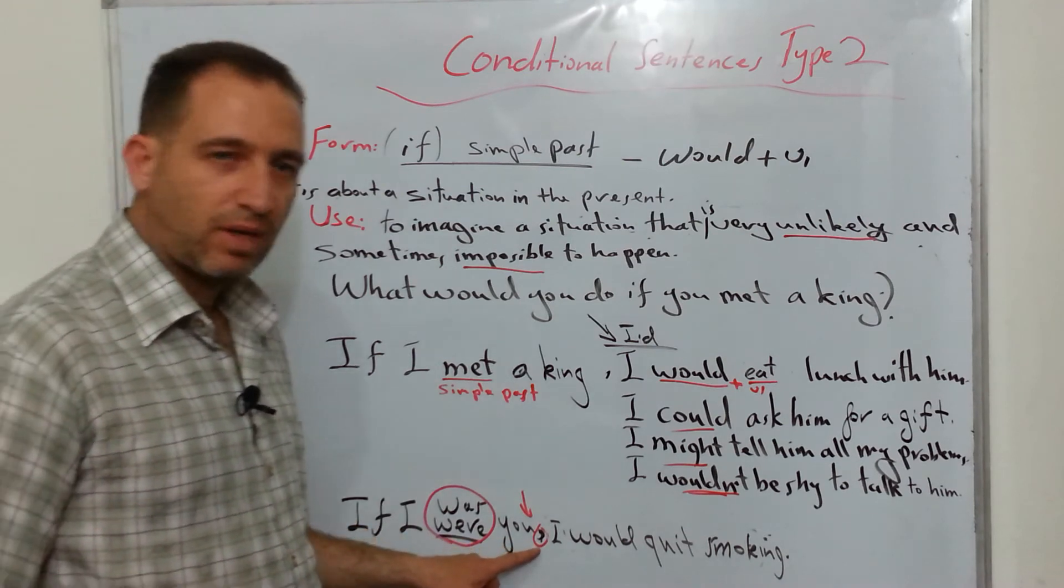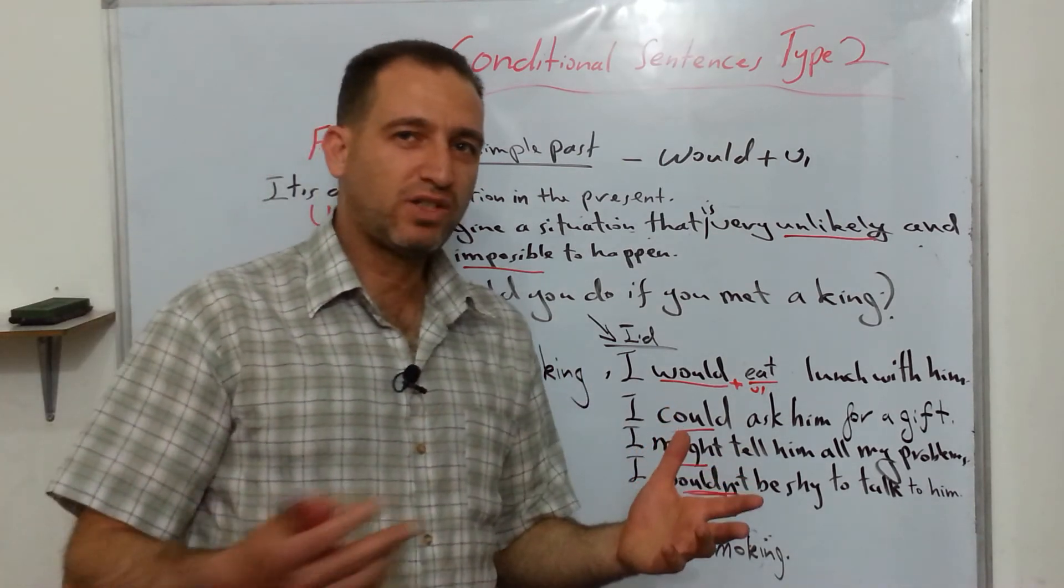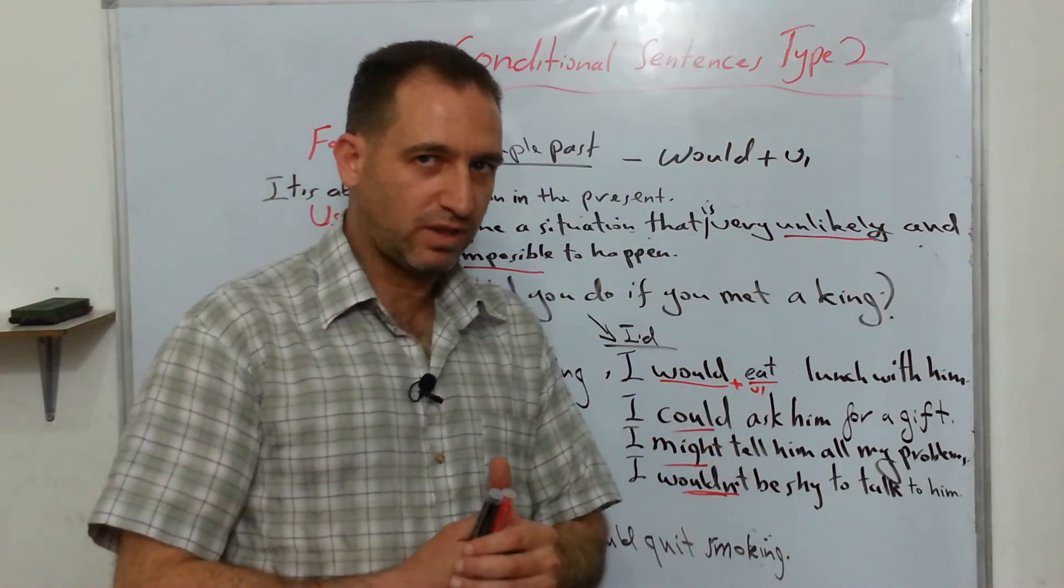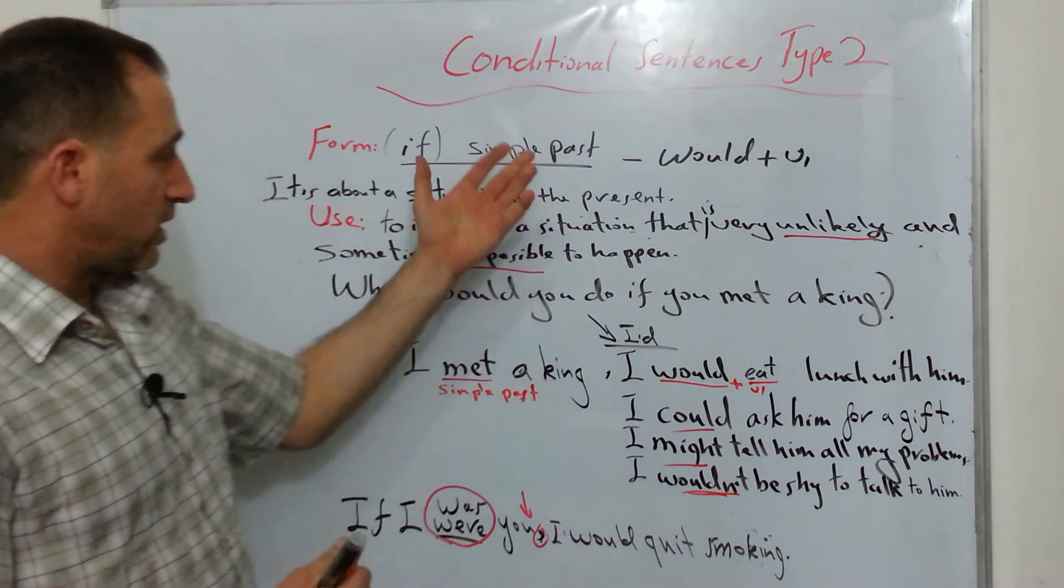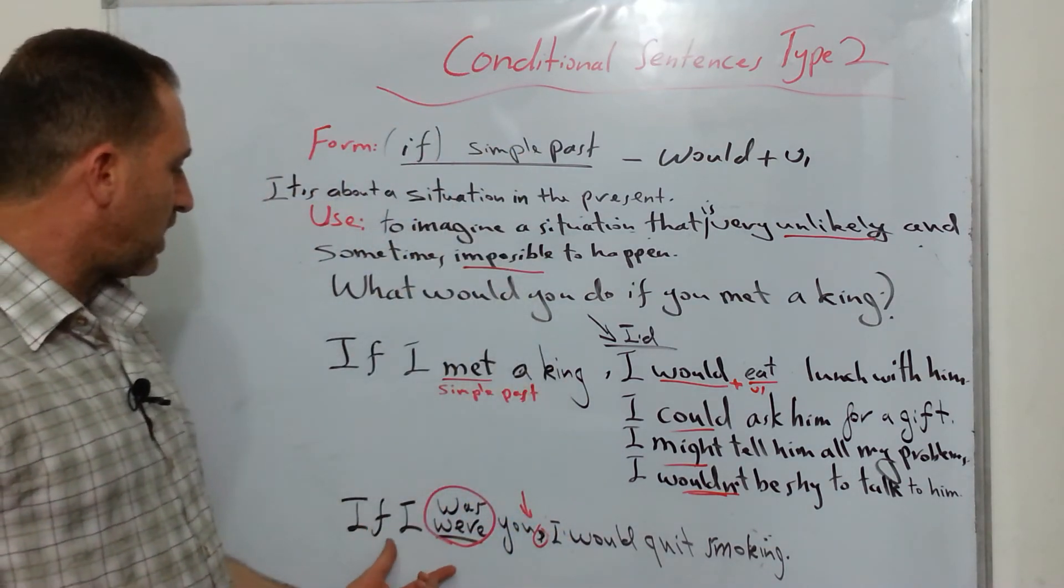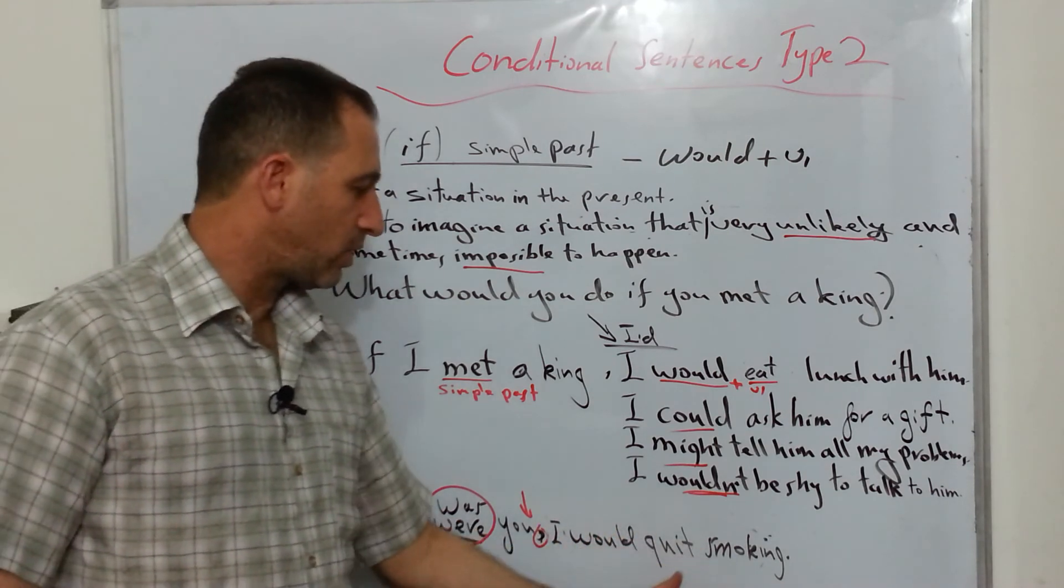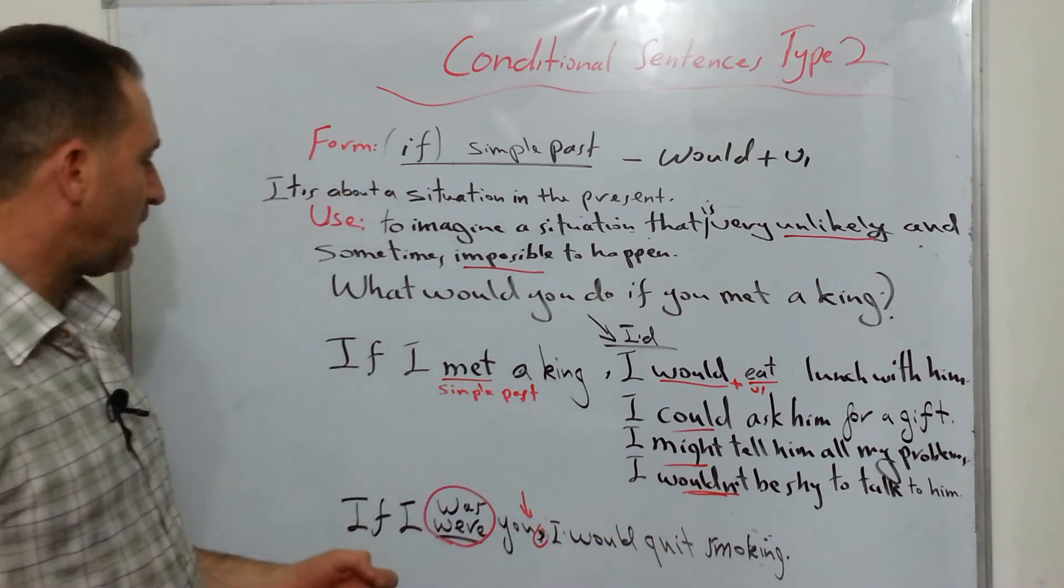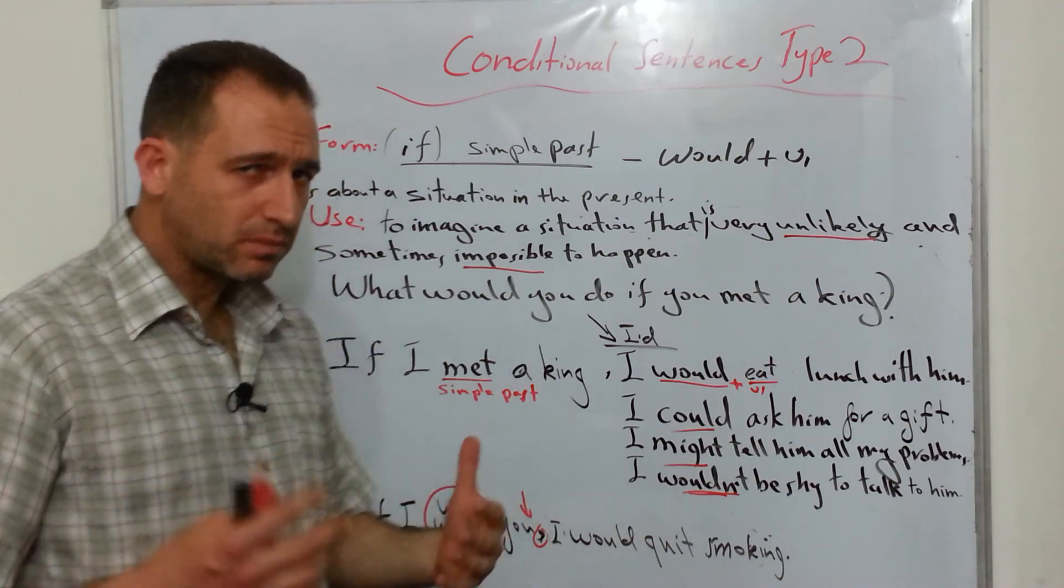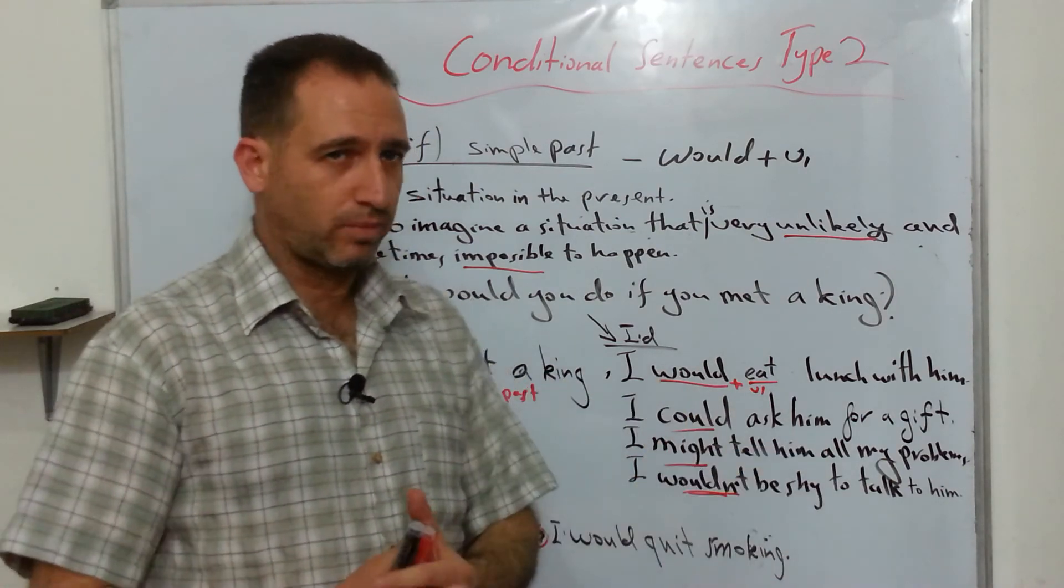I'm having a comma, and you know, you can do some inversion when you have if clauses or conditional sentences. So I can either say, if I were you, I would quit smoking, or I would quit smoking if I were you. But in that case, I'm not going to have the comma, I'm going to drop it.